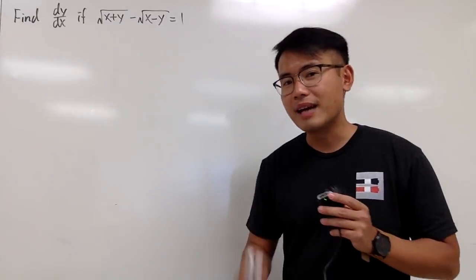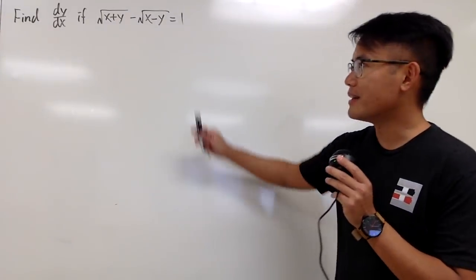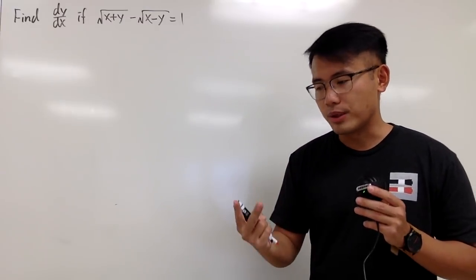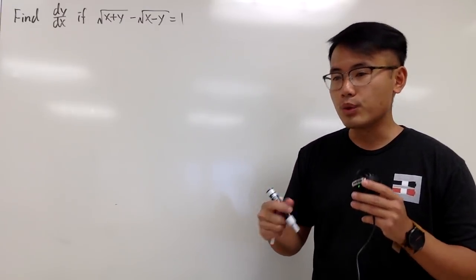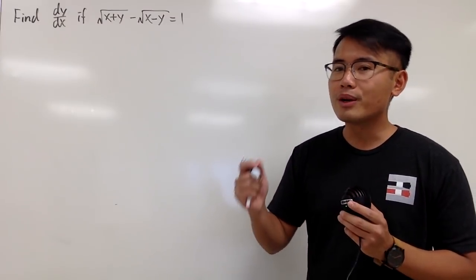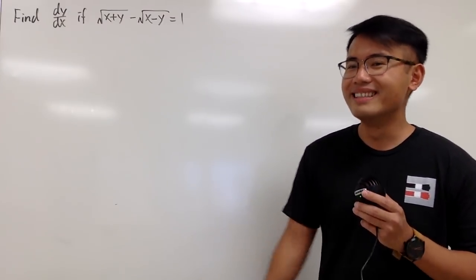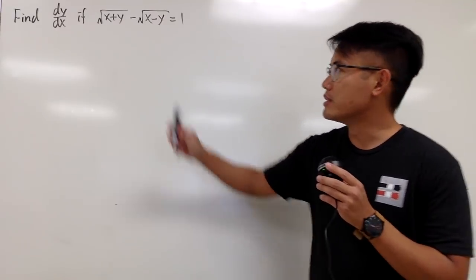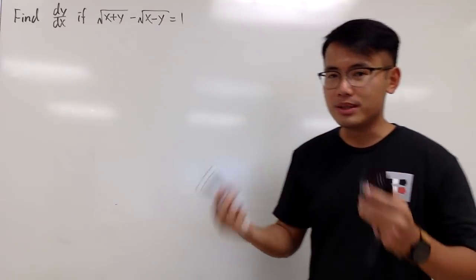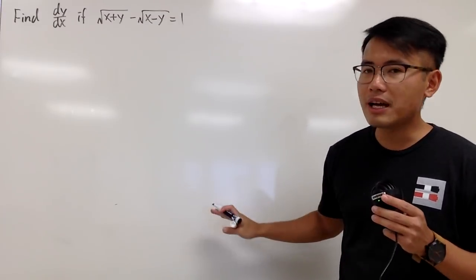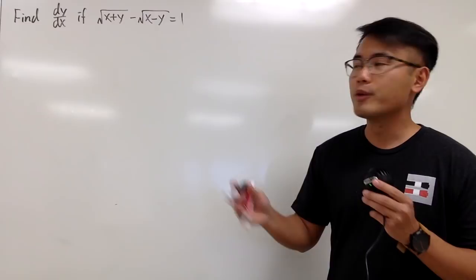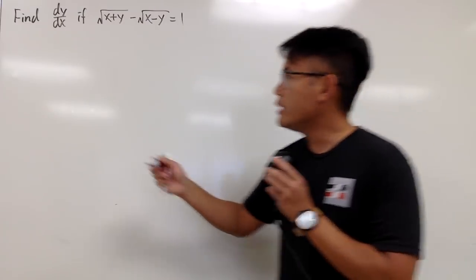This is a continuation video from last time, where we are going to find dy/dx for this equation. In this video, I will show you two ways to do it. The first way is implicit differentiation, just like last time, but today we are going to actually simplify the answer more. The second way, we'll solve for y from this equation first, and then do the derivative. Hopefully we'll see the answers at the end are the same. You can comment down below and let me know which approach you like better.